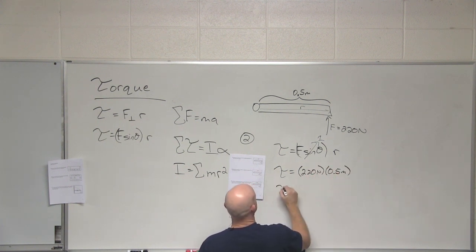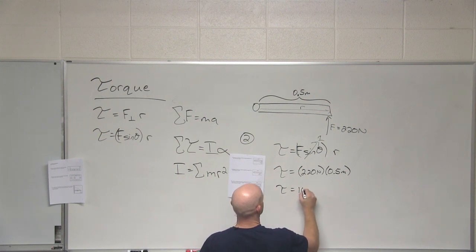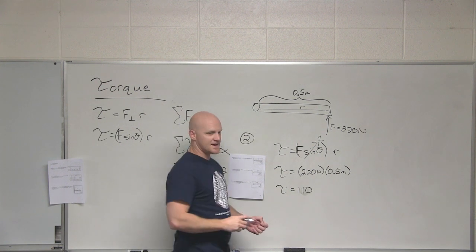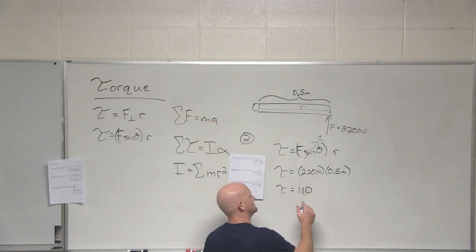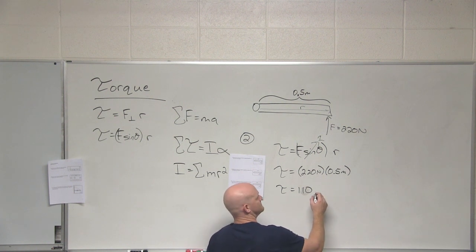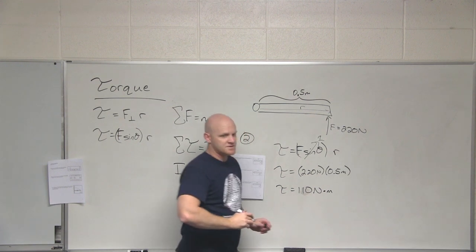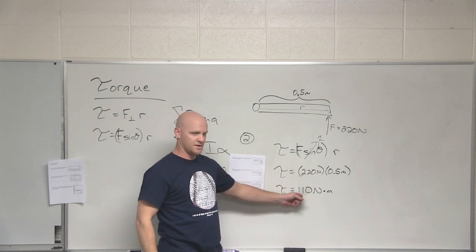I hope you brought a calculator. This one we can do in our heads though. So 220 times 0.5, times a half is 110. And what are the units on this? Yeah, newton meter, just a newton meter. No special unit given to it outside of that. So units of torque here, newton meter.